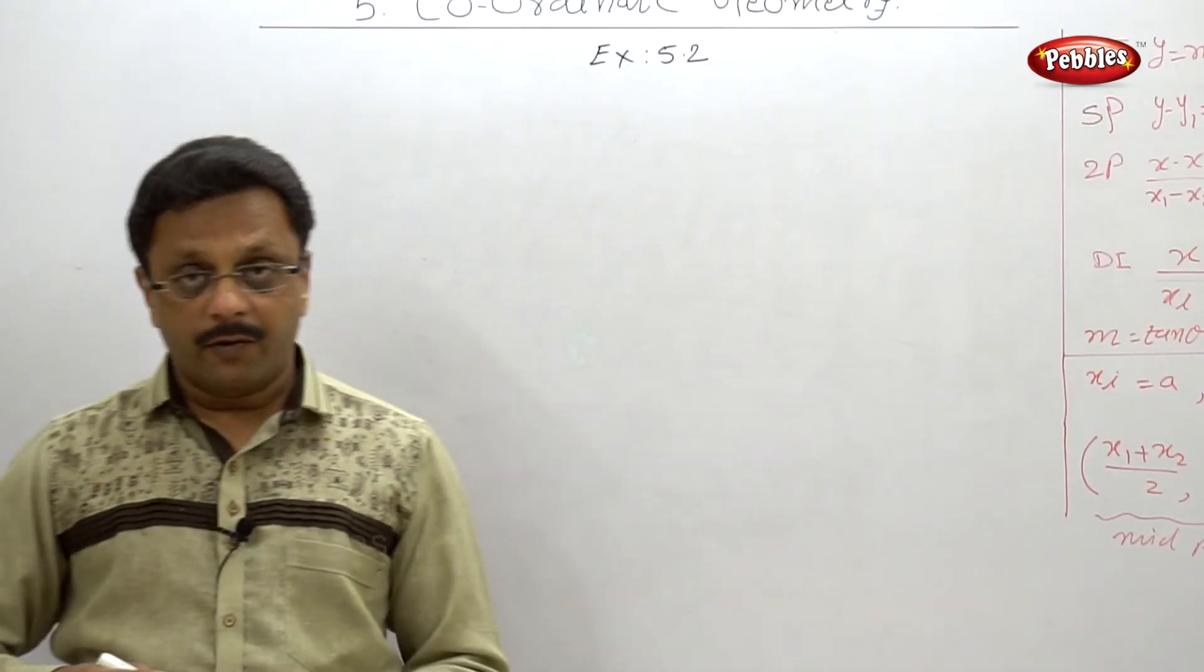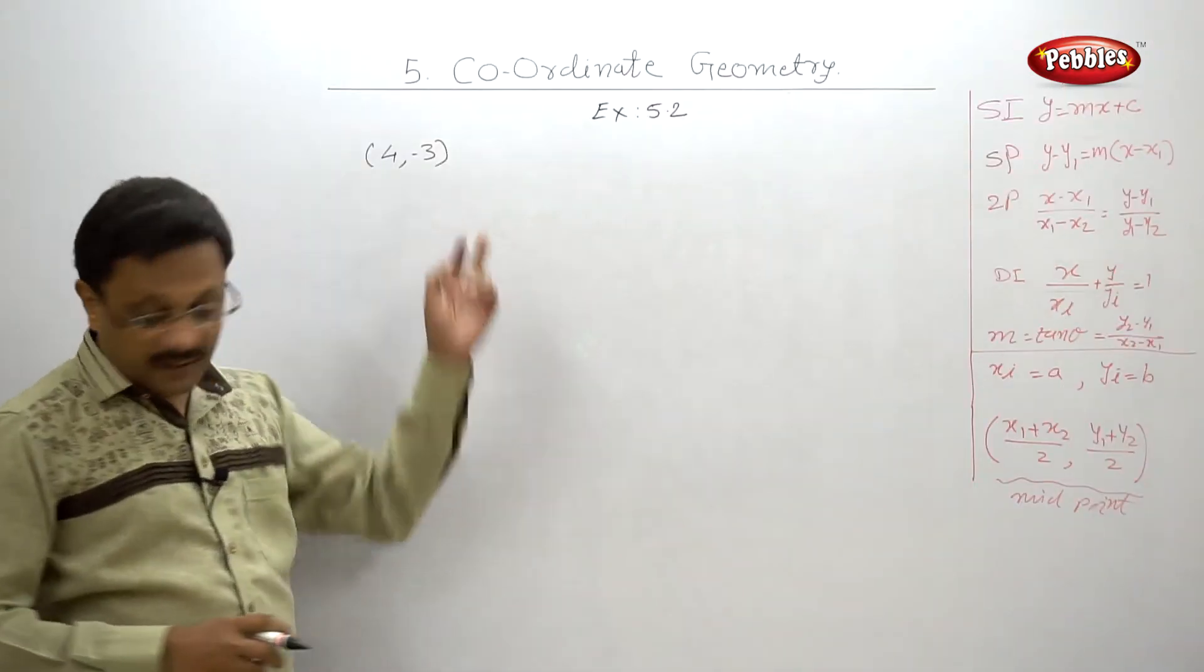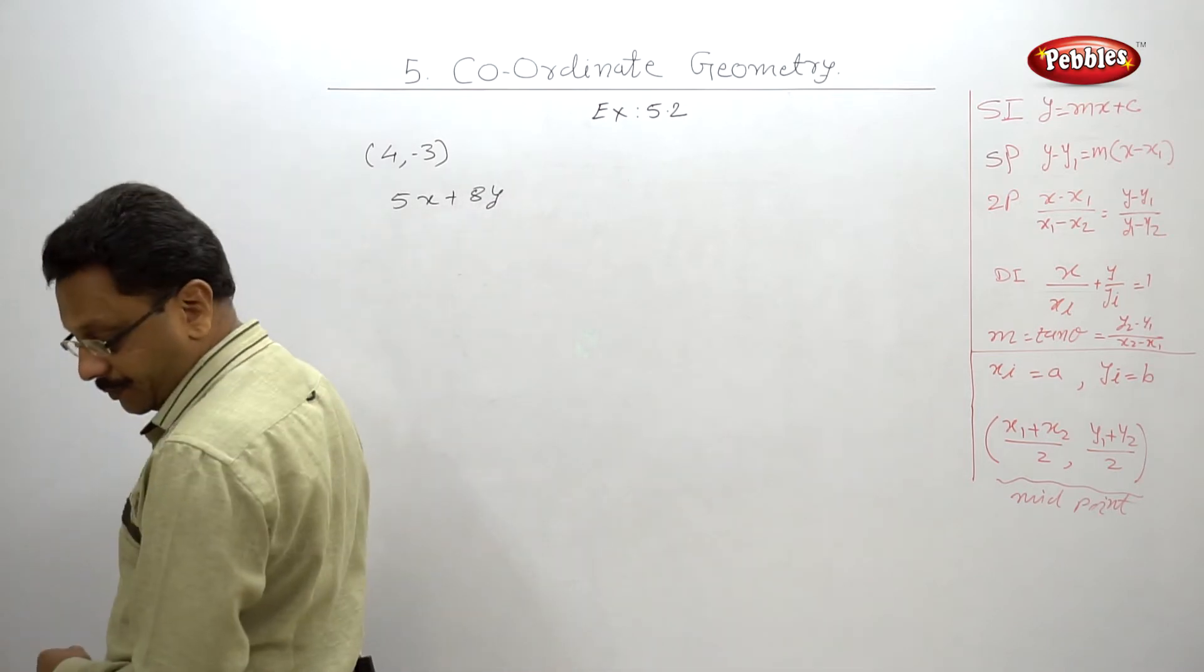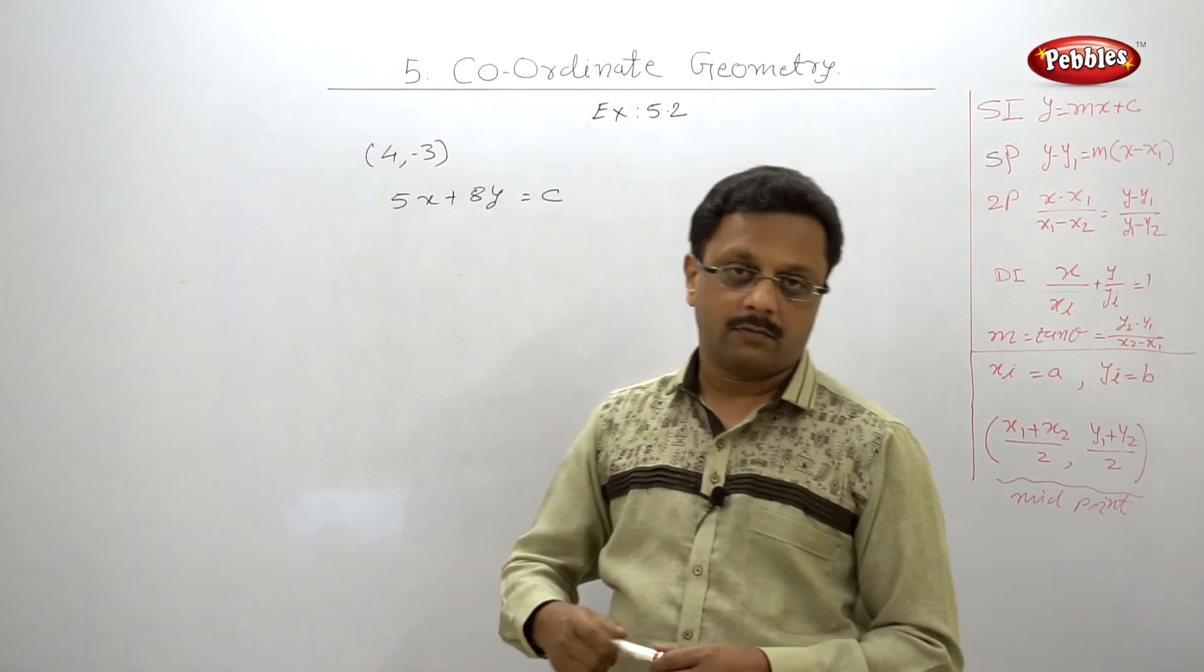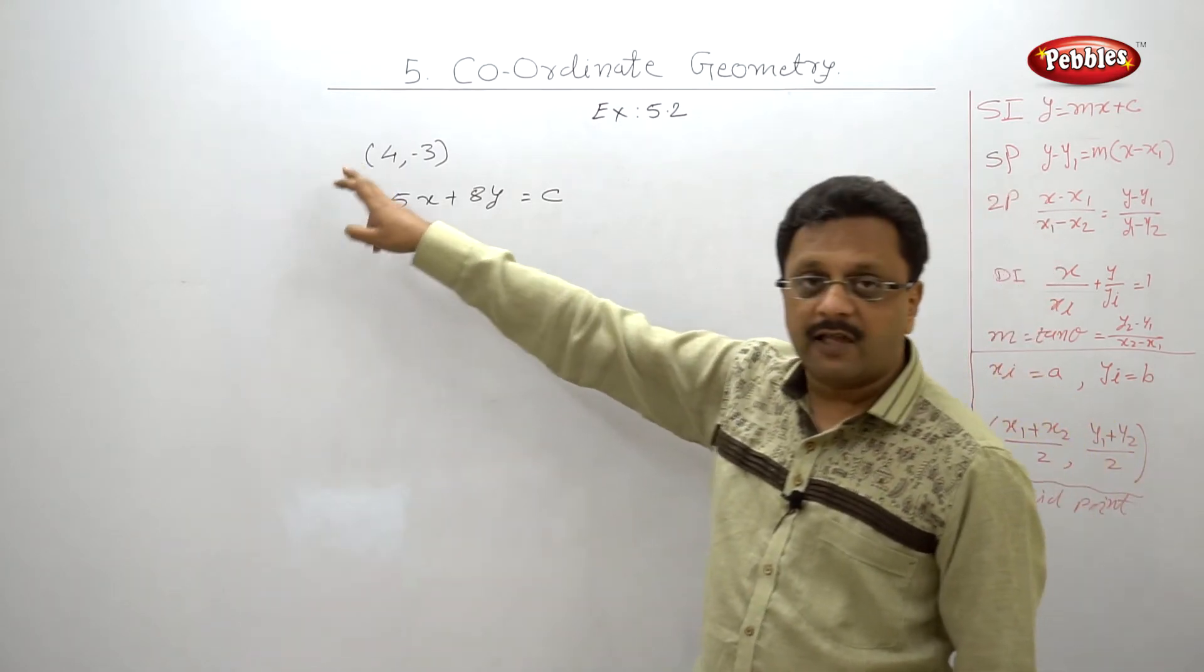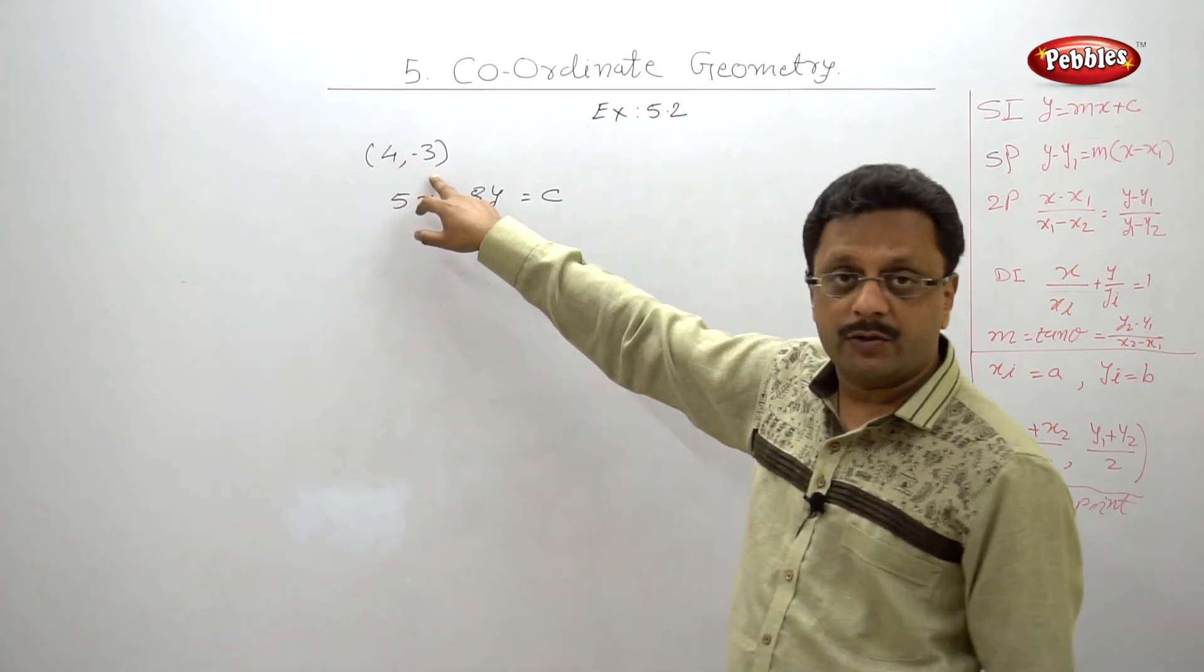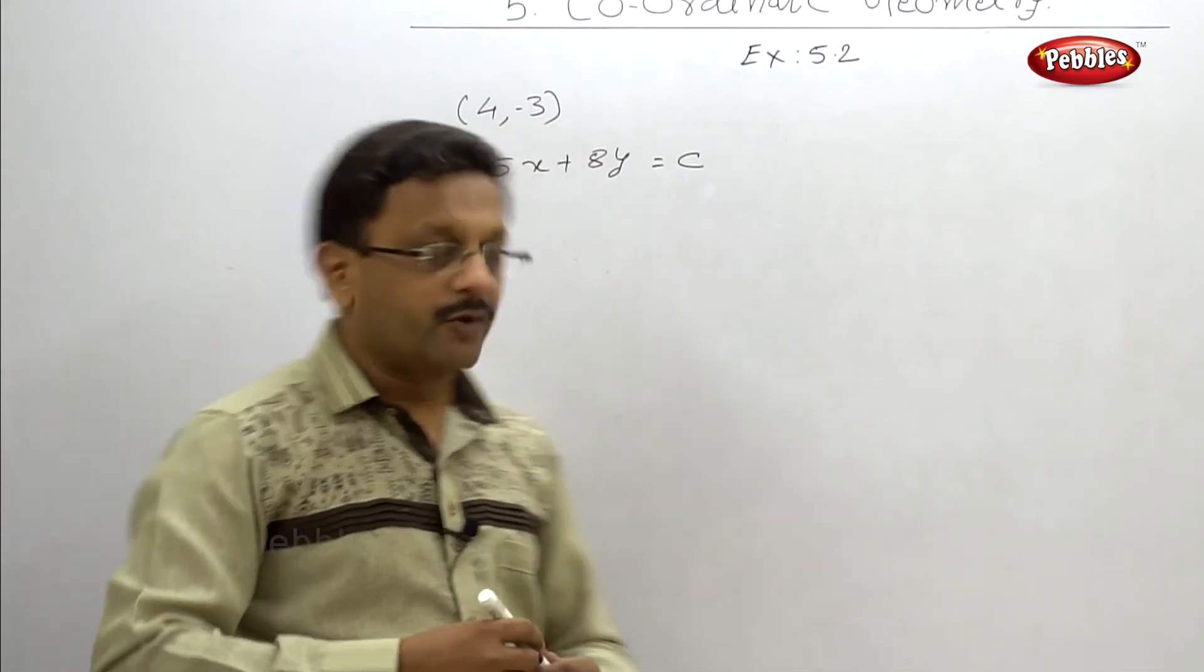The fourth example is, if (4, -3) is a point on the line 5x plus 8y equal to c, find c. I told you that if this point is lying on this line, then this point must satisfy this equation. What do you mean by that? If you replace x and y by these two values, only c is unknown and you can easily find c. Let us quickly solve this.